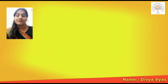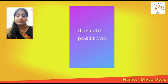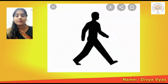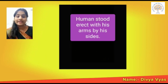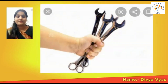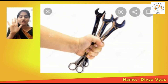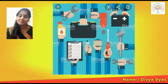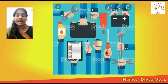Our first point is that human beings walk in an upright position. Upright position means human beings stand erect with their arms by their sides. This leaves their upper limbs free to do many things. Human beings have a thumb and can use their hands to hold any tool and do many things.